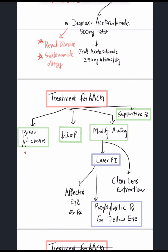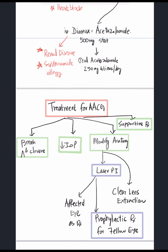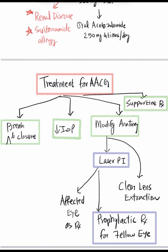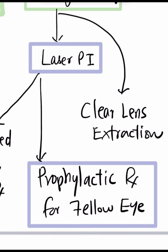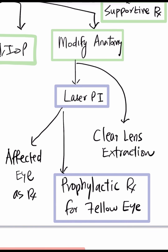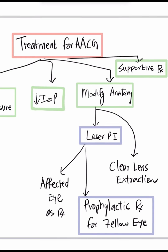The third goal — modifying angle anatomy — is achieved by laser peripheral iridotomy, performed only after angle closure is broken and IOP reduced so corneal edema clears. Importantly, laser PI must be given to both the affected eye and the fellow eye, since the fellow eye also has a shallow anterior chamber. This prevents future attacks. Some authorities also advocate clear lens extraction to eliminate pupillary block entirely, as removing the lens prevents angle closure.